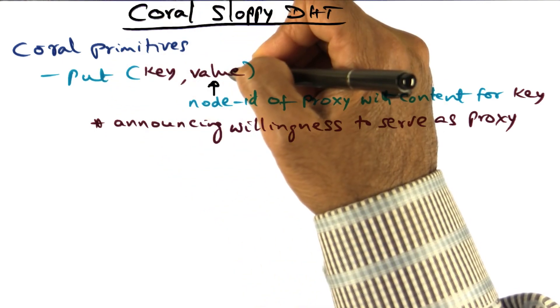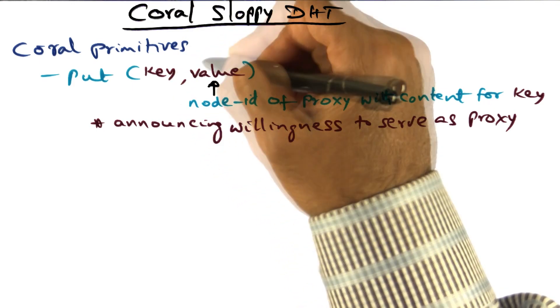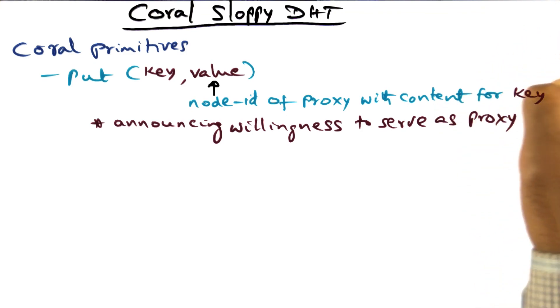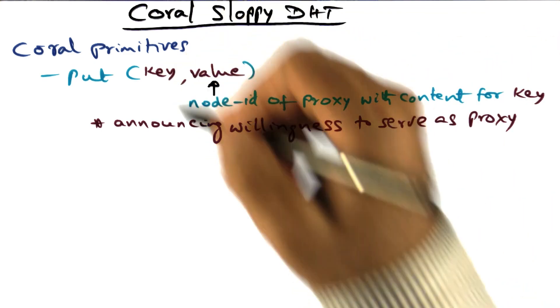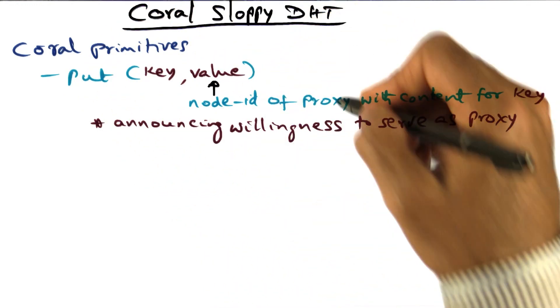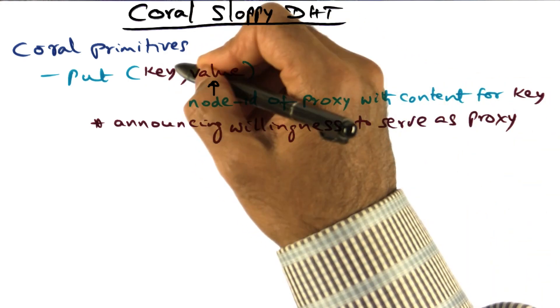So put takes two parameters, key and value. Key is the content hash, and value is the node ID of the proxy with the content for the particular key. Essentially, the put is announcing the willingness of the proxy to serve the content whose signature is key.